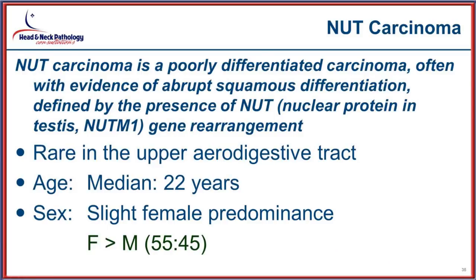The next entity is actually a new — not provisional — tumor: NUT carcinoma. This is a poorly differentiated carcinoma showing abrupt areas of squamous differentiation, defined by the presence of the NUT gene rearrangement. NUT stands for Nuclear protein in Testis, also abbreviated NUT-M1. While the vast majority develop in the mediastinum or abdominal cavity, when they occur in the upper aerodigestive tract the sinonasal tract is the most common location. Critically, the median age of presentation is 22 years — so this should be considered any time you make a carcinoma diagnosis in a very young patient.